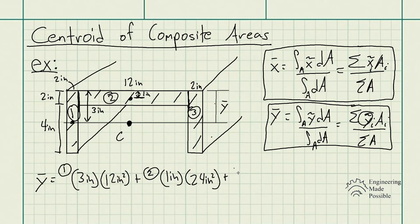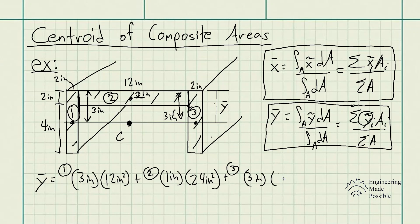The third area is going to be basically the same as area number one because they're the same shape. Its centroid is three inches from the top. So the centroid of that rectangle is three inches, times its cross-sectional area, which is two inches times six inches, giving us 12 square inches.